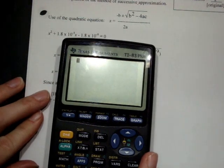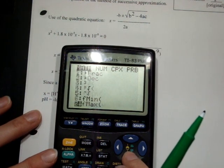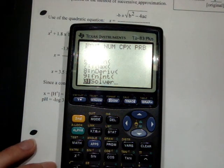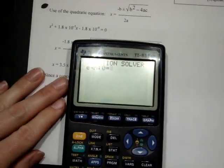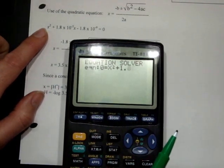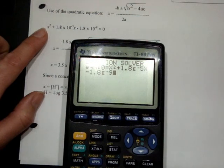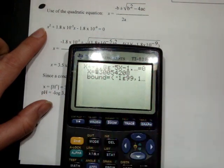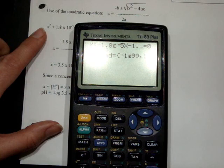We can use either the graphing function or solver function. If you have your graphing calculator, go to Math. Depending on which operating system you have, it's either 0 or B, but go down to the solver. Hit enter at the solver, and it says equation 0 equals. Type in your equation in the 0 equals form. In this case, X² + 1.8×10⁻⁵X - 1.8×10⁻⁹, then hit enter.